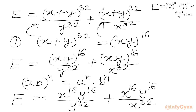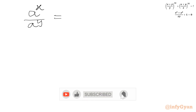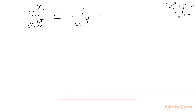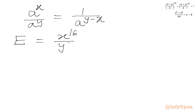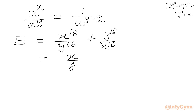Using the exponent law (ab)^n = a^n · b^n, we expand (xy)^16 as x^16 · y^16. Then applying a^x over a^y = 1 over a^(y−x), the expression simplifies to x^16 over y^16 plus y^16 over x^16, which can be written as (x/y)^16 + (y/x)^16.